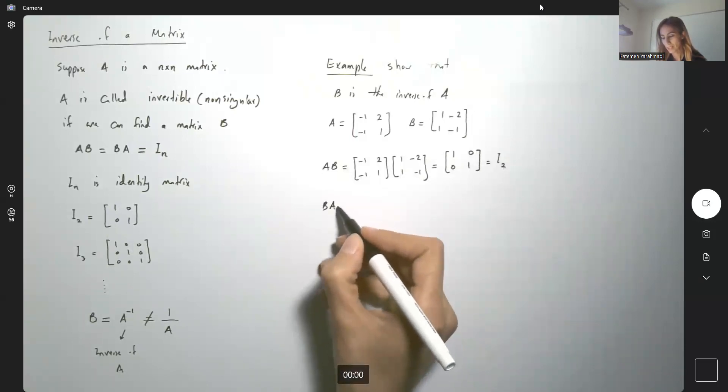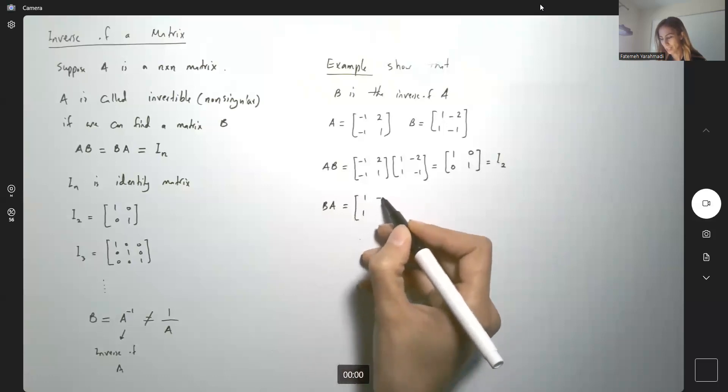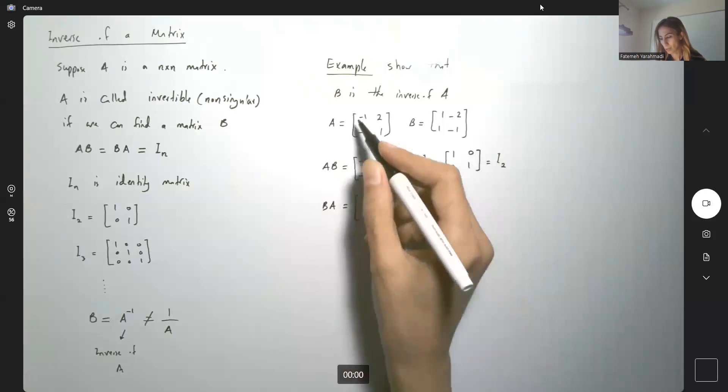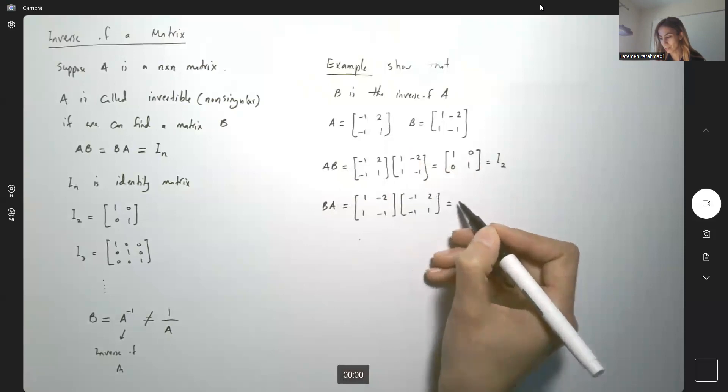So let's check BA as well. We get the exact same result. 1, negative 2, 1 and negative 1, multiplied by A, which is negative 1, 2, negative 1 and 1. Here we go.